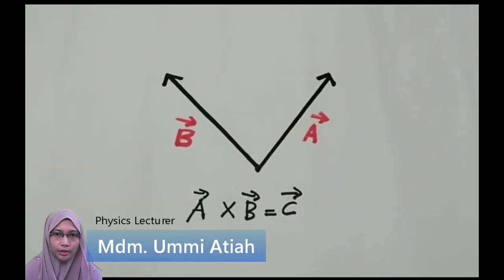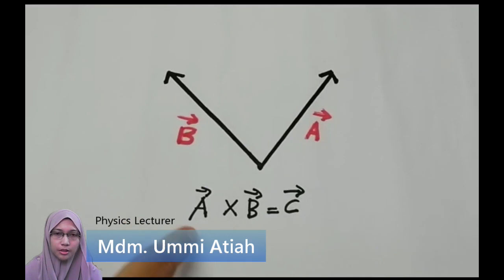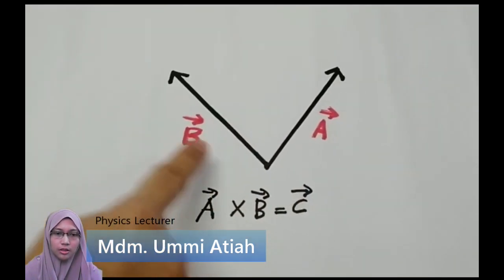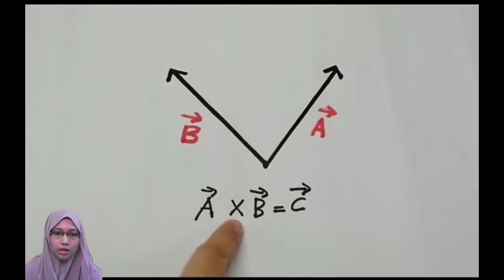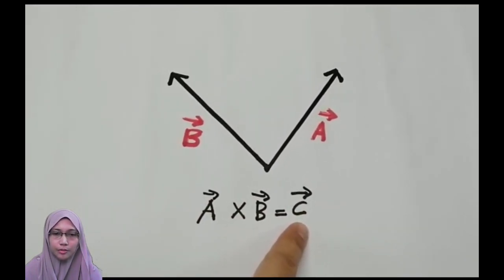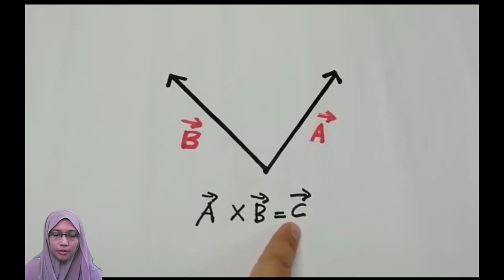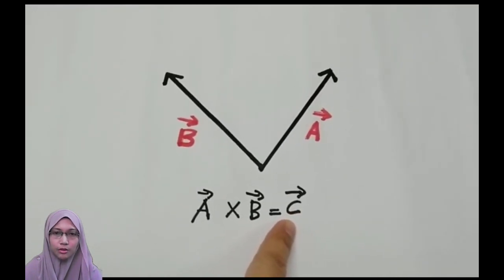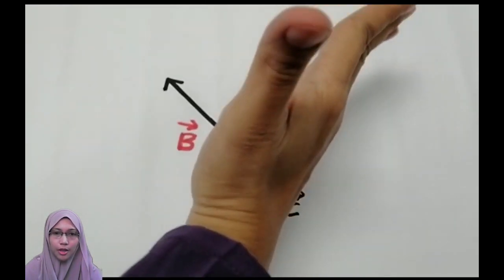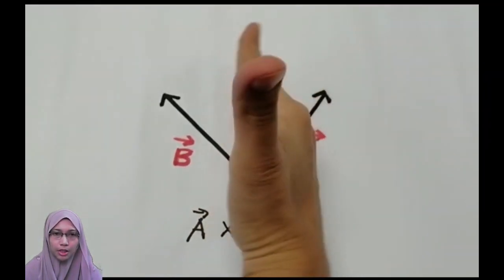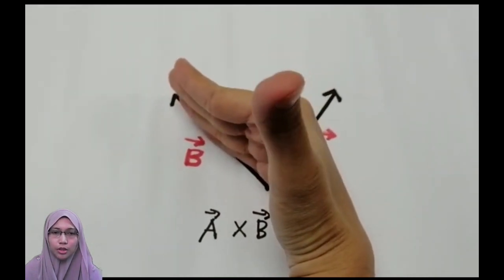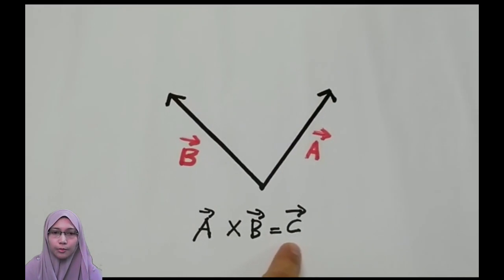Now, we look at A cross B. This is vector A and this is vector B. A cross B will produce a new vector C. To determine the direction of vector C, we use the right-hand rule: we swipe our right hand from A to B, and we produce a new vector C pointing upward or out of the page.